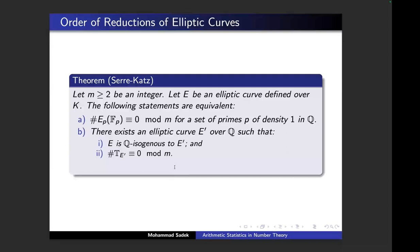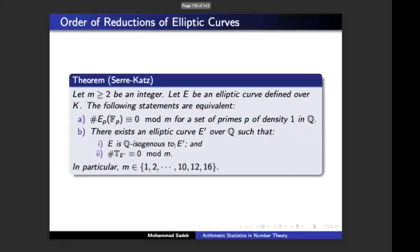Both directions work, and that works for a proportion-one set of primes. If you manage to prove it for density one of primes, you get the converse direction. This means the only integers allowed to divide all the reductions of elliptic curves modulo primes are the integers provided by Mazur's list.